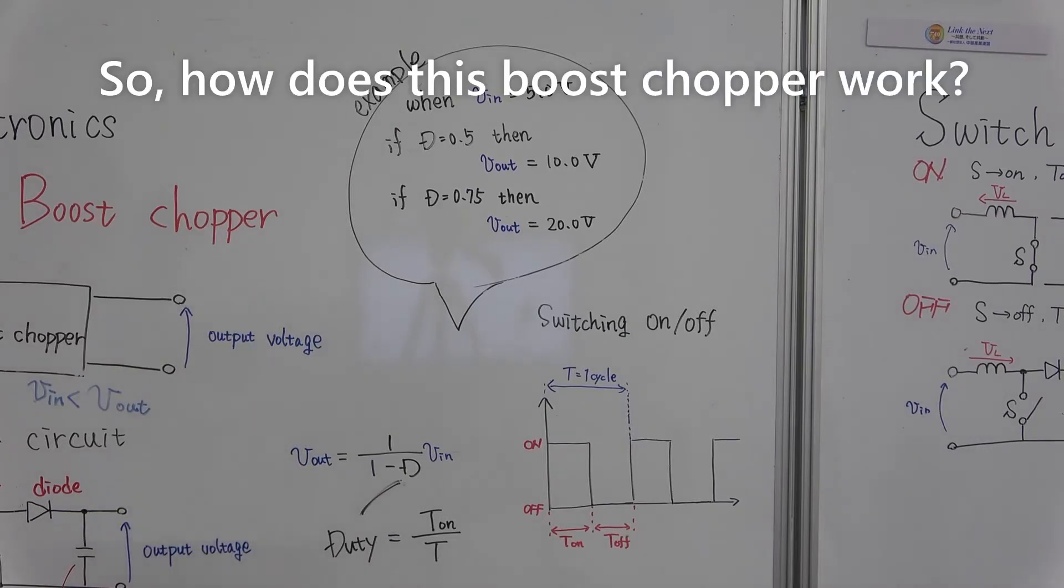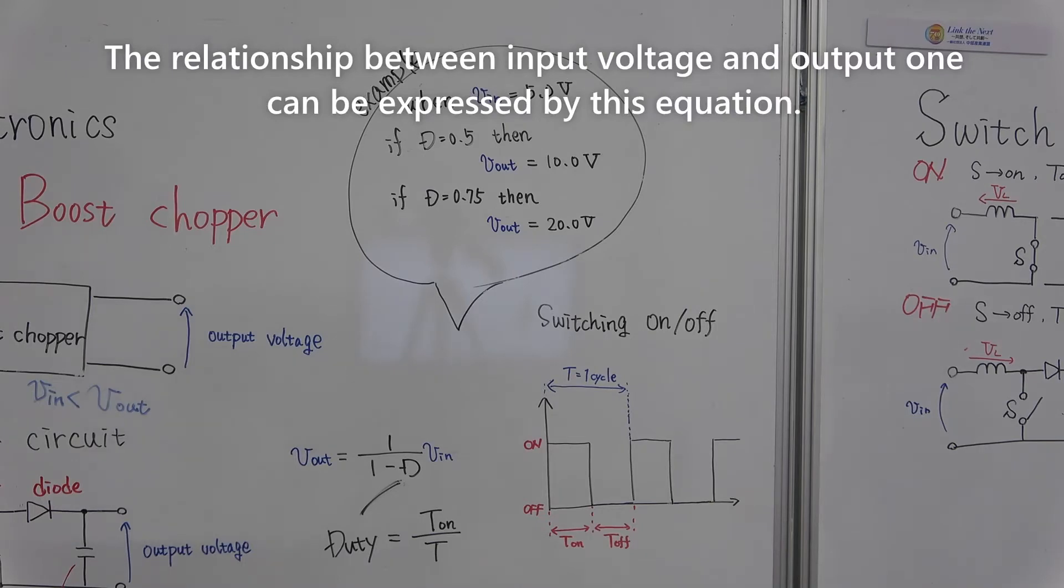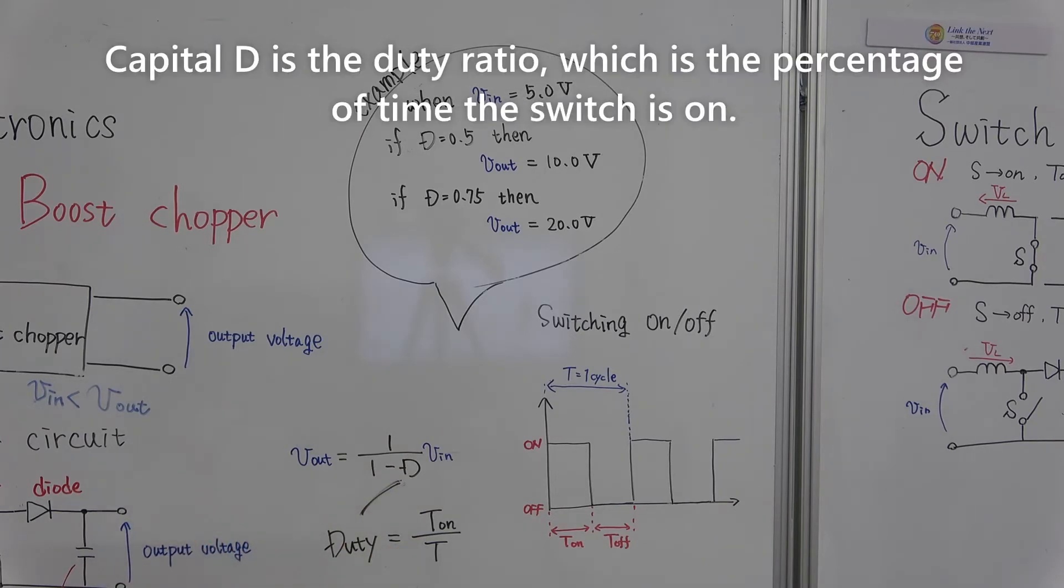So, how does this boost chopper work? The relationship between input voltage and output one can be expressed by this equation. Capital D is a duty rate, which is percentage of time the switch is on.